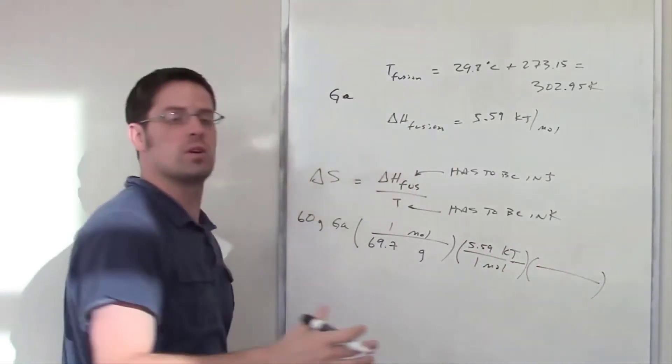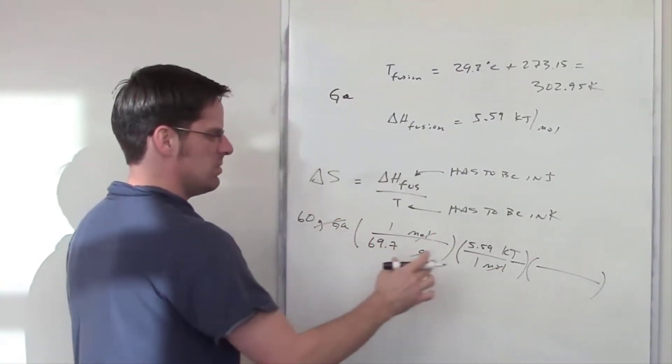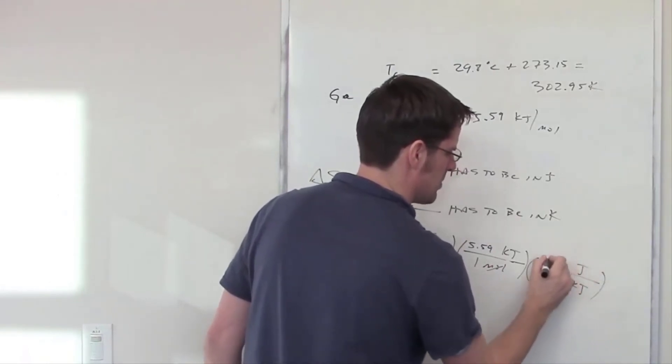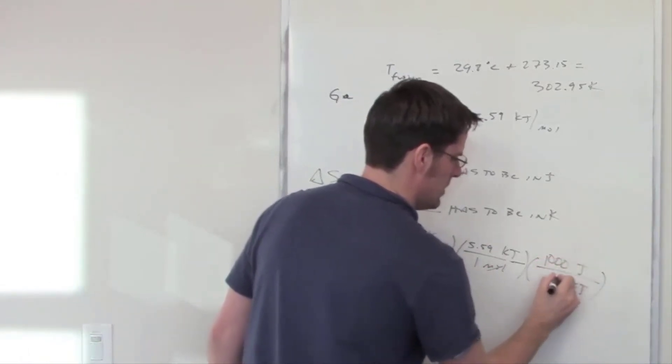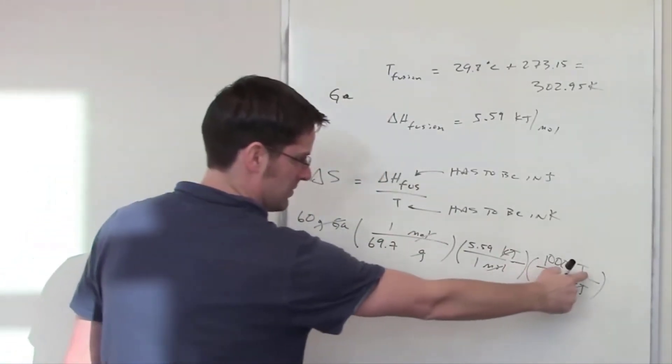And then I want to get to joules. The moles cancel each other out. The grams cancel each other out. But I'm still off with kilojoules so I'm going to have to put kilojoules in the basement, joules in the numerator. Remember that there are 1,000 joules for every 1 kilojoule. That cancels everything out and I'm left with units of joules.